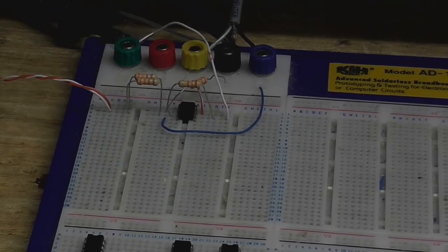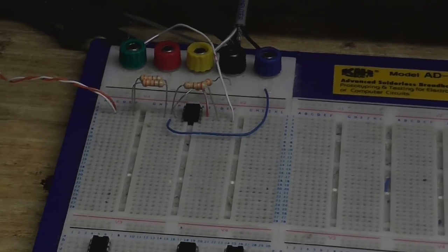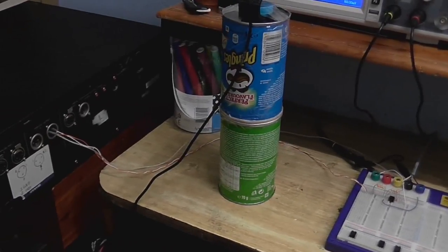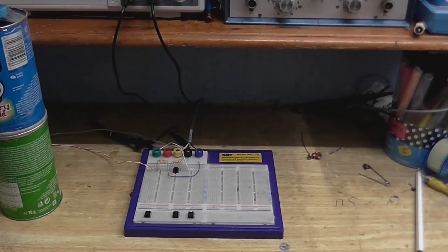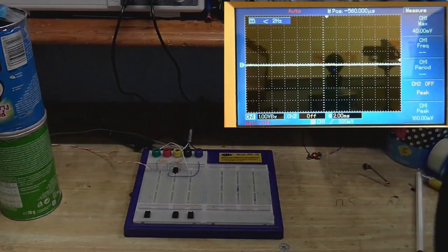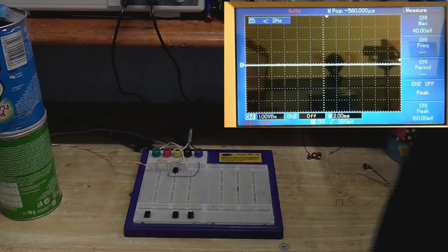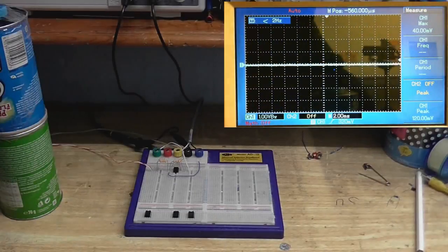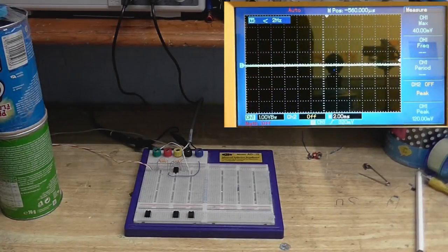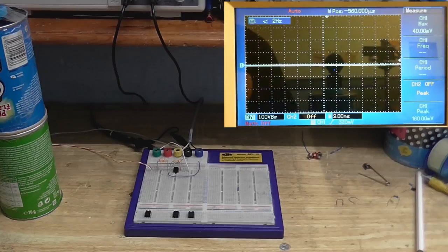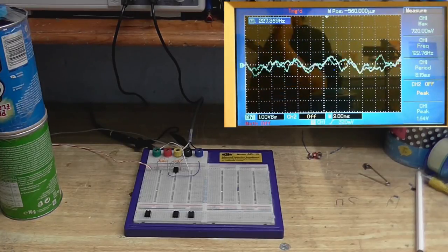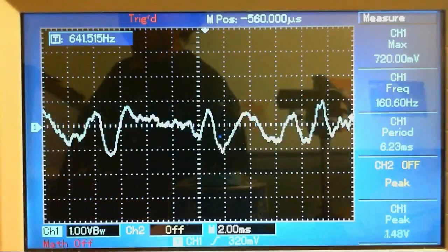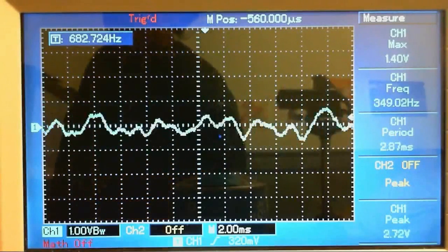All right, so here we are with the chip version of the circuit. Once again, connected into the output of the DAT player. So, let me just move over so I can hit that play button. And here we go. And as you can see, it's working absolutely perfectly.